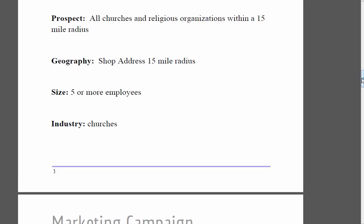For our prospect, it's all churches and religious organizations within a 15-mile radius. We use the word 'churches,' but this applies to synagogues and mosques as well — it's just common language and was easier to talk about.